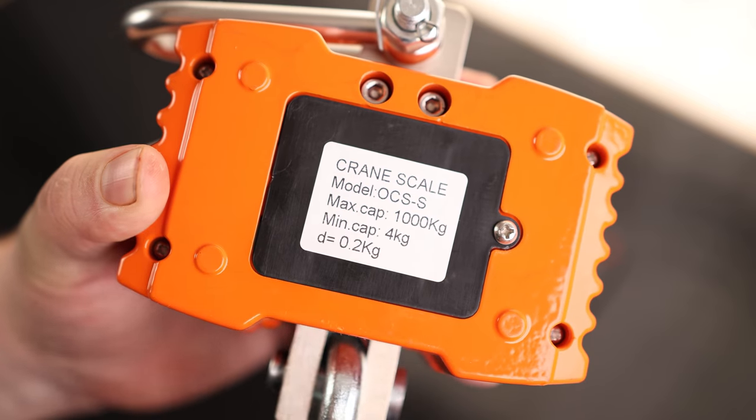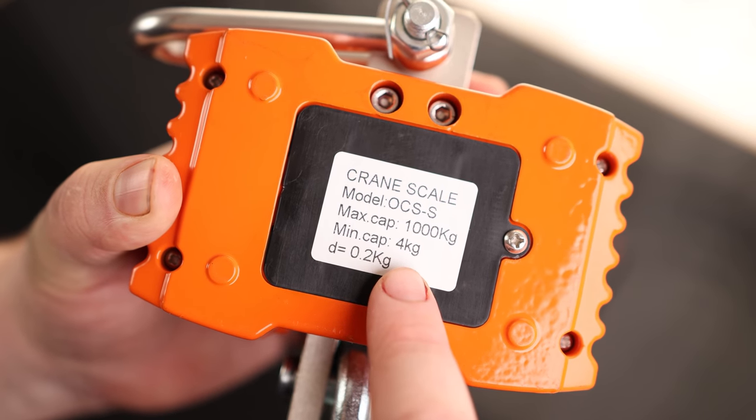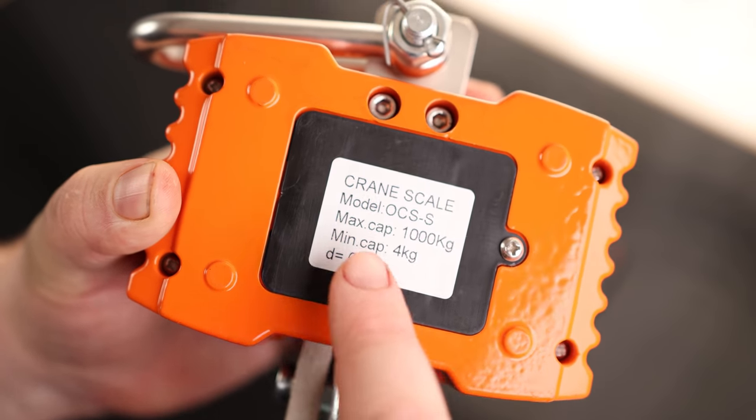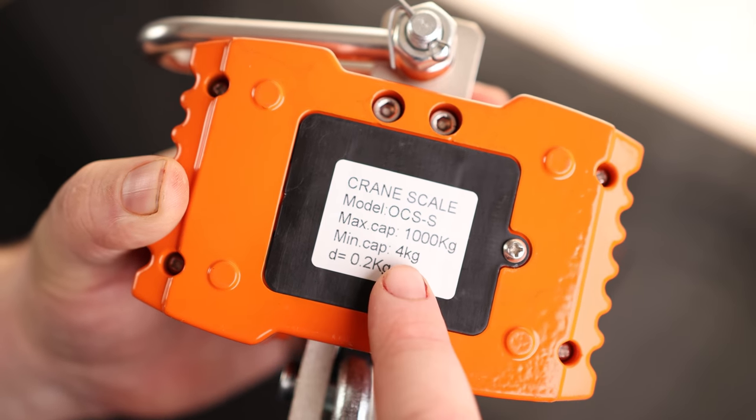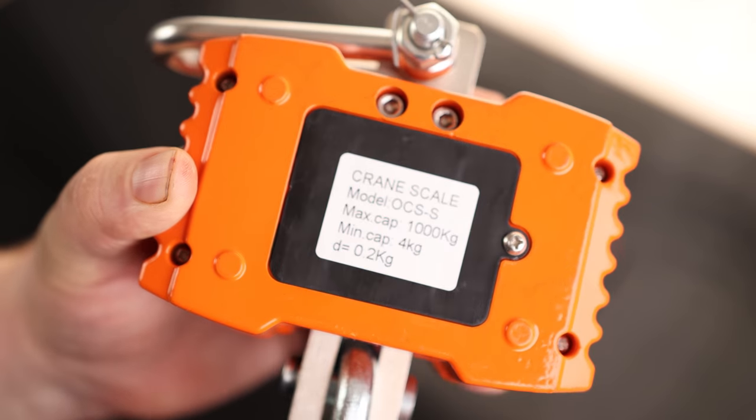I do like that they put the capacity on the back. So this has a minimum weight of 4 kilograms, which is around just under 9 pounds, and a maximum of 1,000 kilograms, which is about 2,200 pounds. So whatever you're weighing, it has to be between 9 pounds and 2,200 pounds for this to register properly.